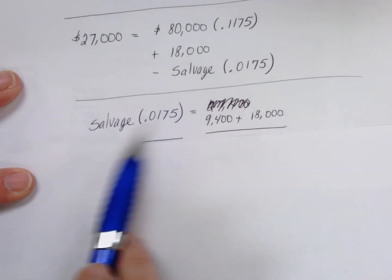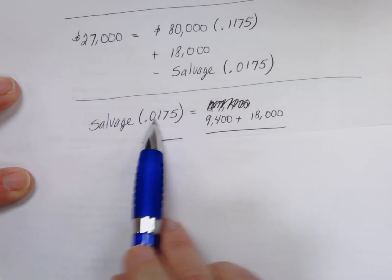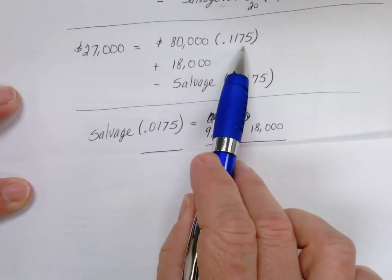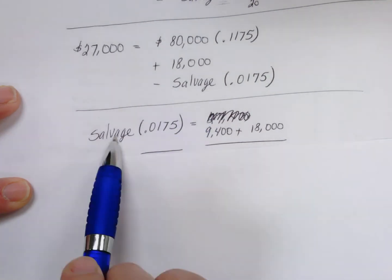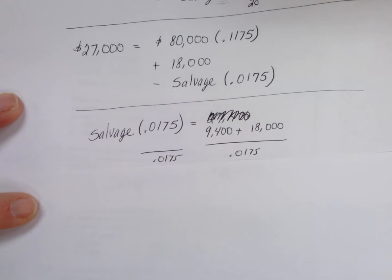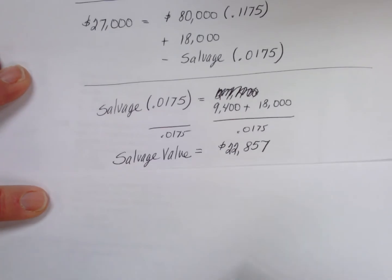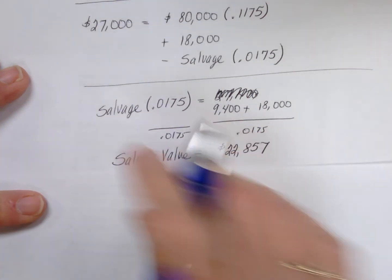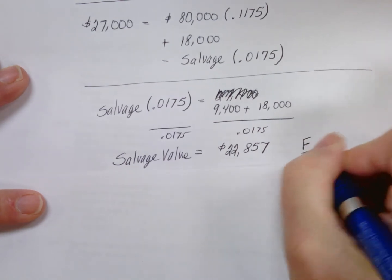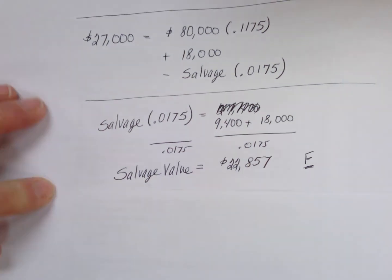So solving then again for this situation, just rearranging terms, we want the salvage value to be on its own side of the equation times its factor equals 80,000 times this factor is 9,400 plus the 18,000 from here equals the salvage value on the other side of the equation. Then we divide both sides by 0.0175 to get the salvage value on its own, just a little bit of algebra, and the salvage value then we come up with is 22,857. And what that actually is is the future value of what we'd have to sell that machine for at the end of its 20-year life, $22,857.